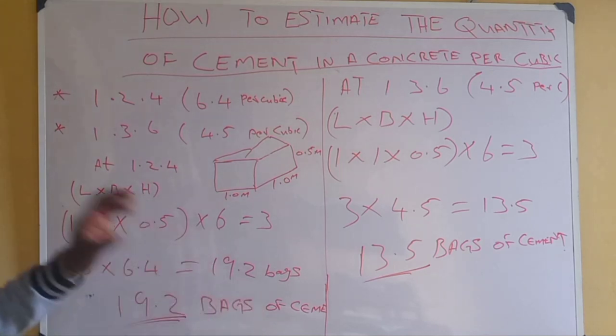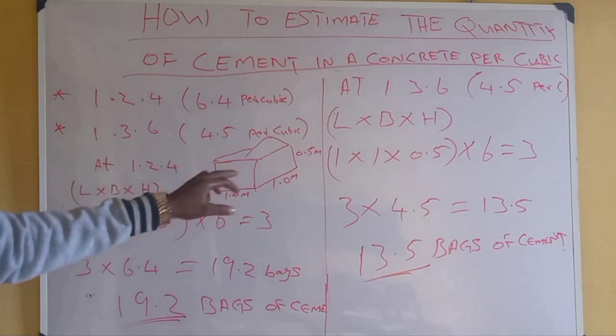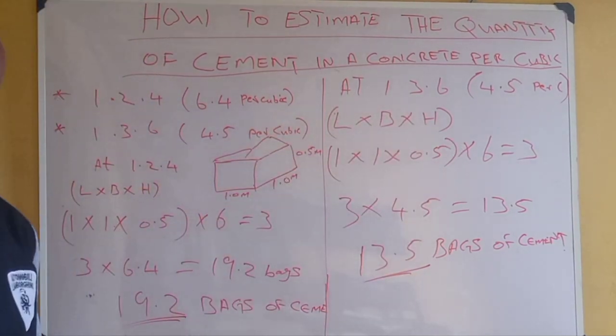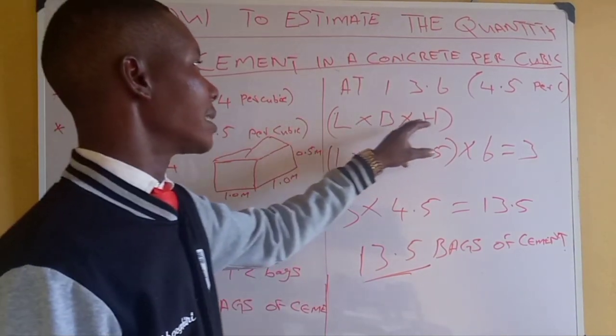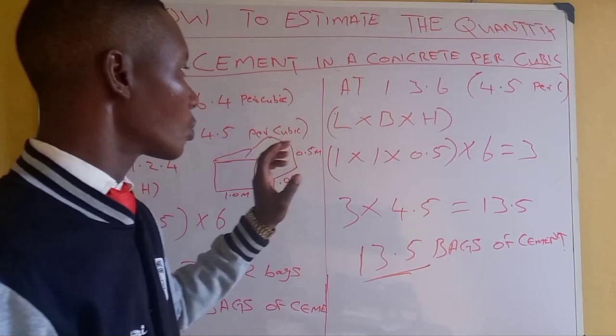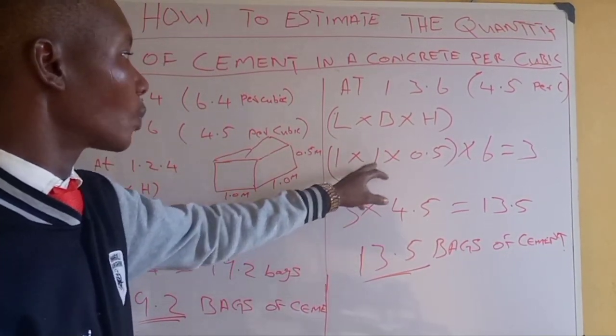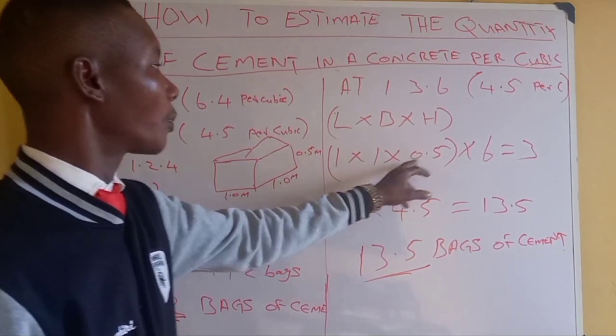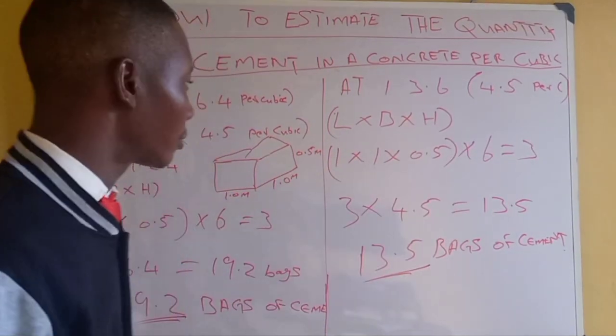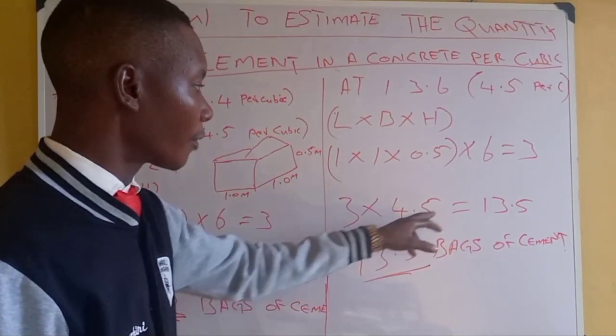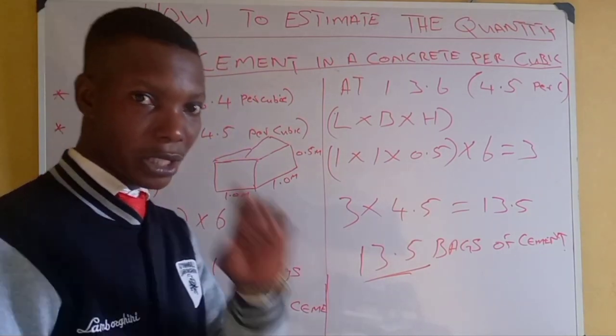19 bags of cement is to be used. But at ratio 1:3:6, we have 4.5 bags per cubic meter. We are also applicable to this other formula, which is length times breadth times height, which equals 3. What you have to do now is 1 times 1 equals 1, times 0.5 equals 0.5 times 6, you have 3.